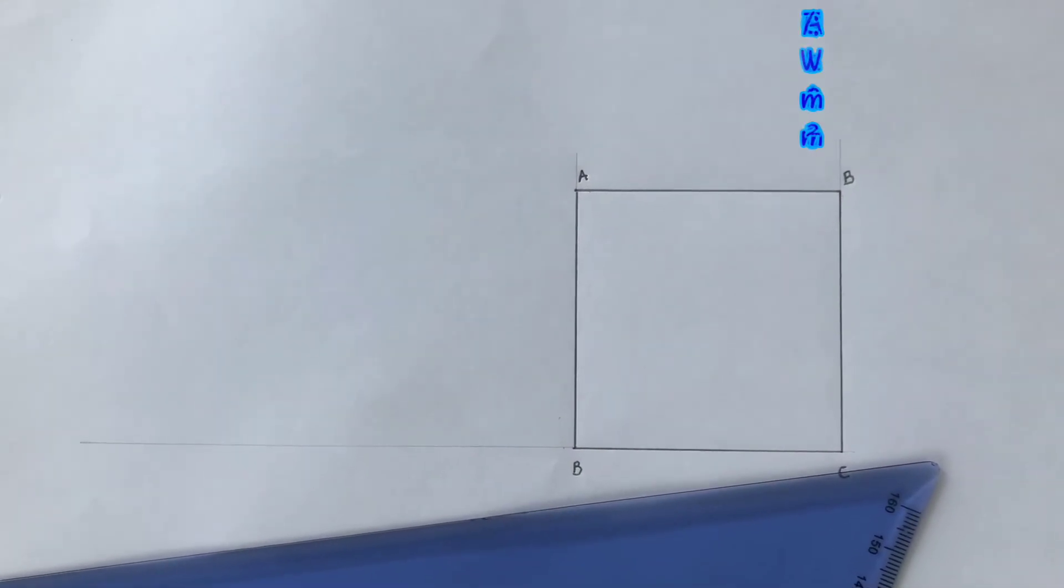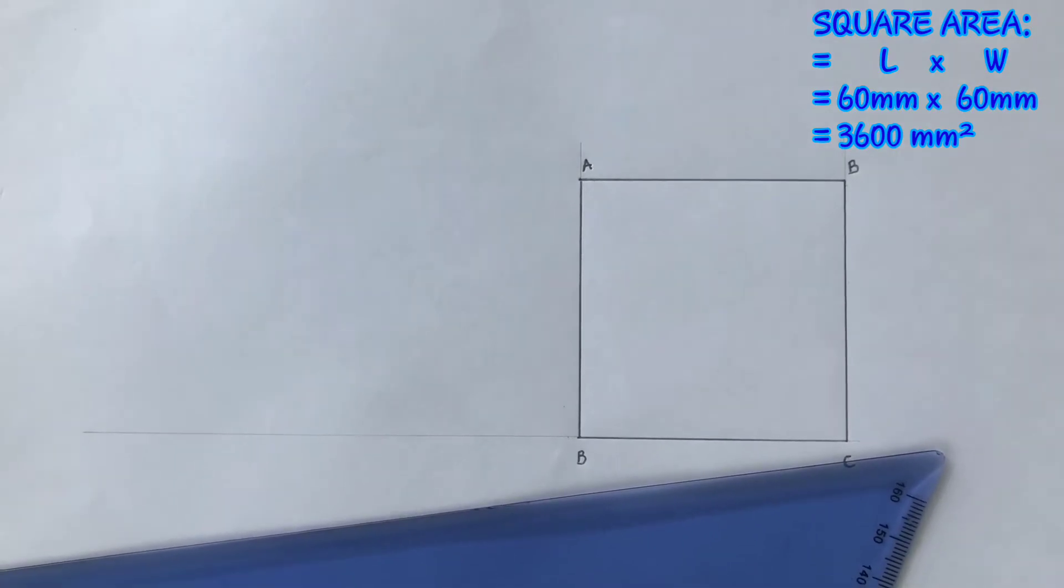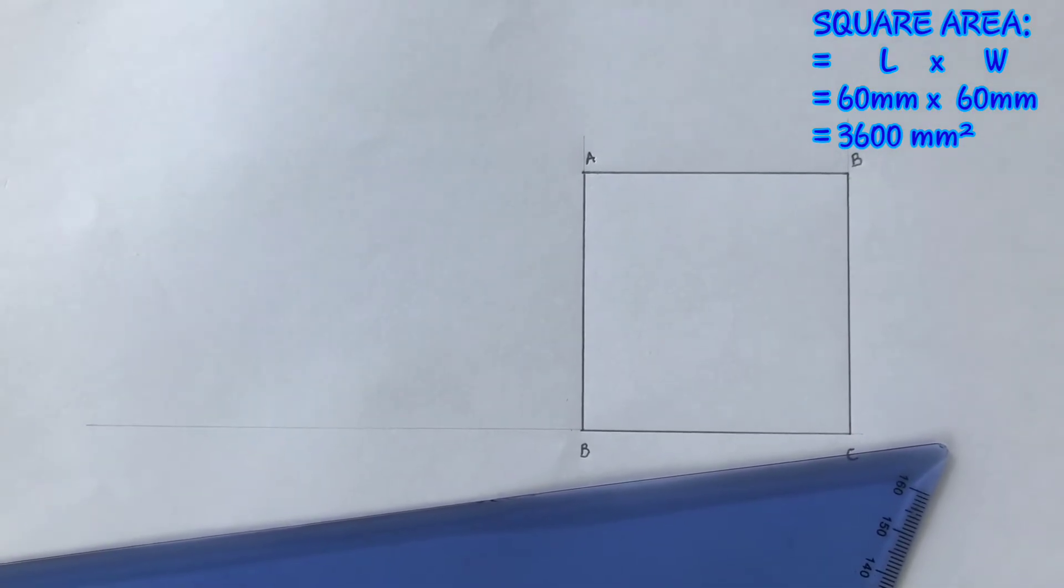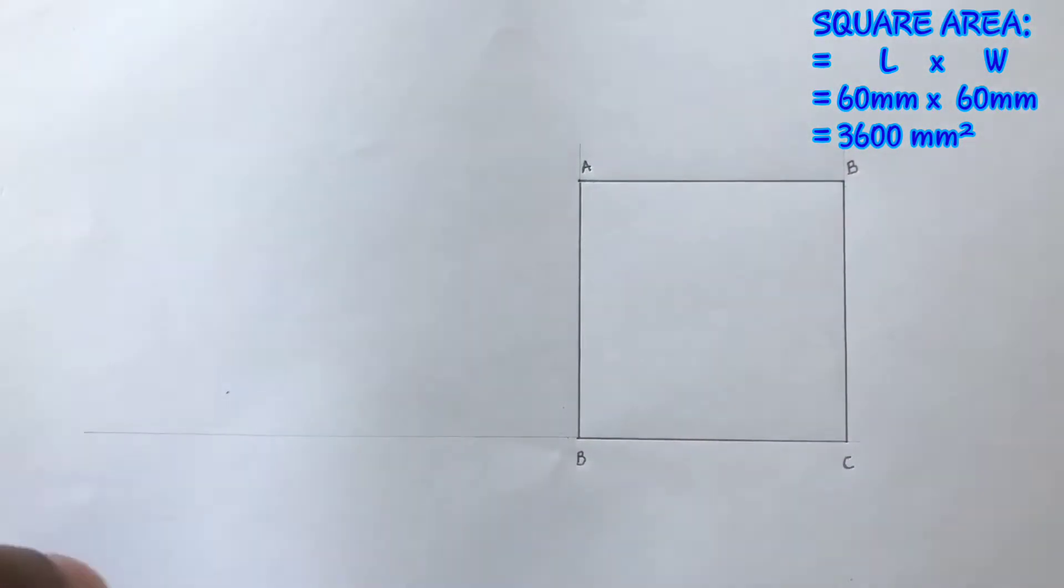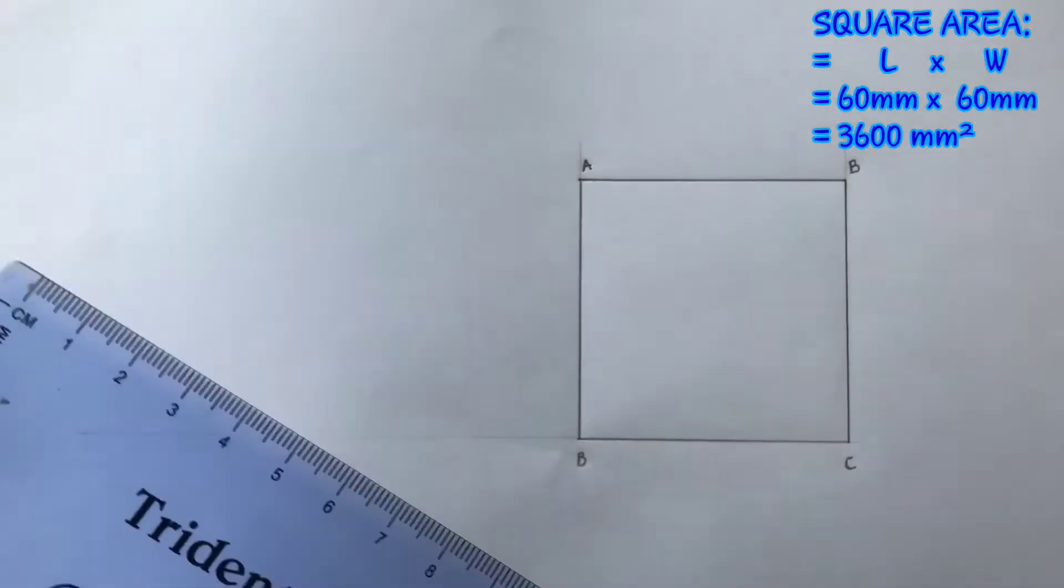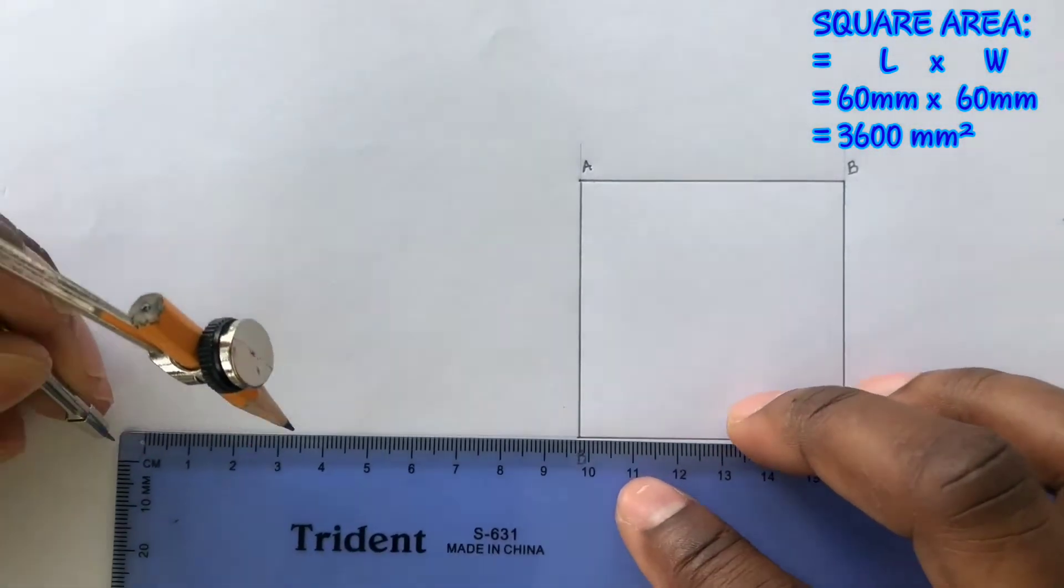The square you drew has an area of 3600 millimeter square, length times width. Now use your compass to mark off 100 millimeters from point B to the left.